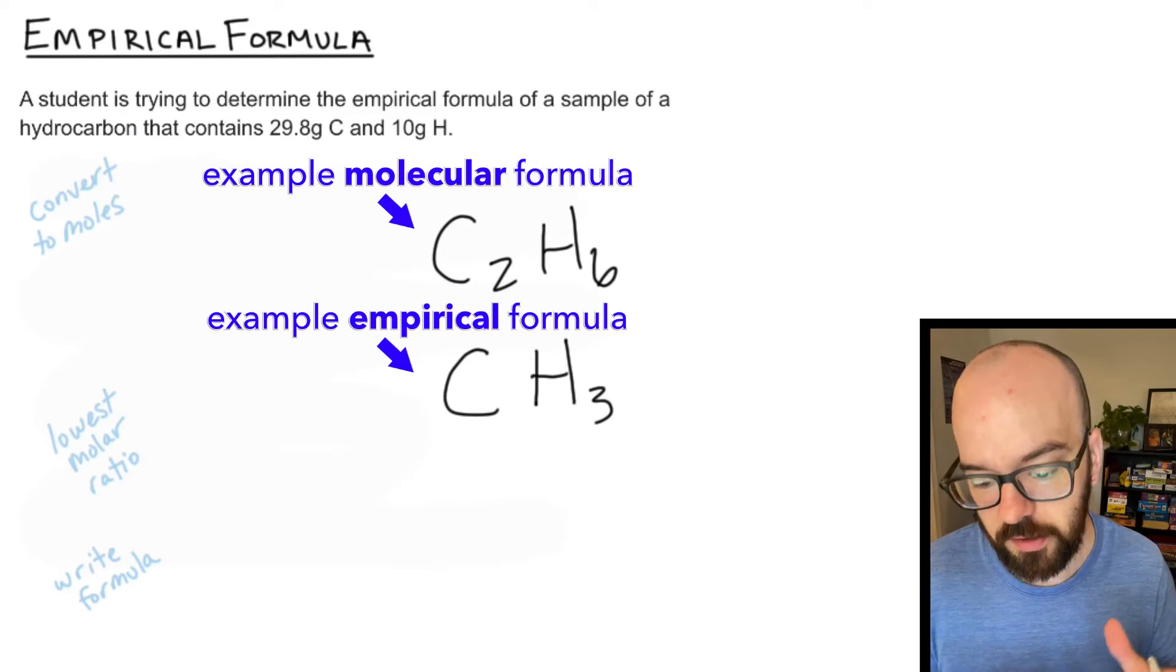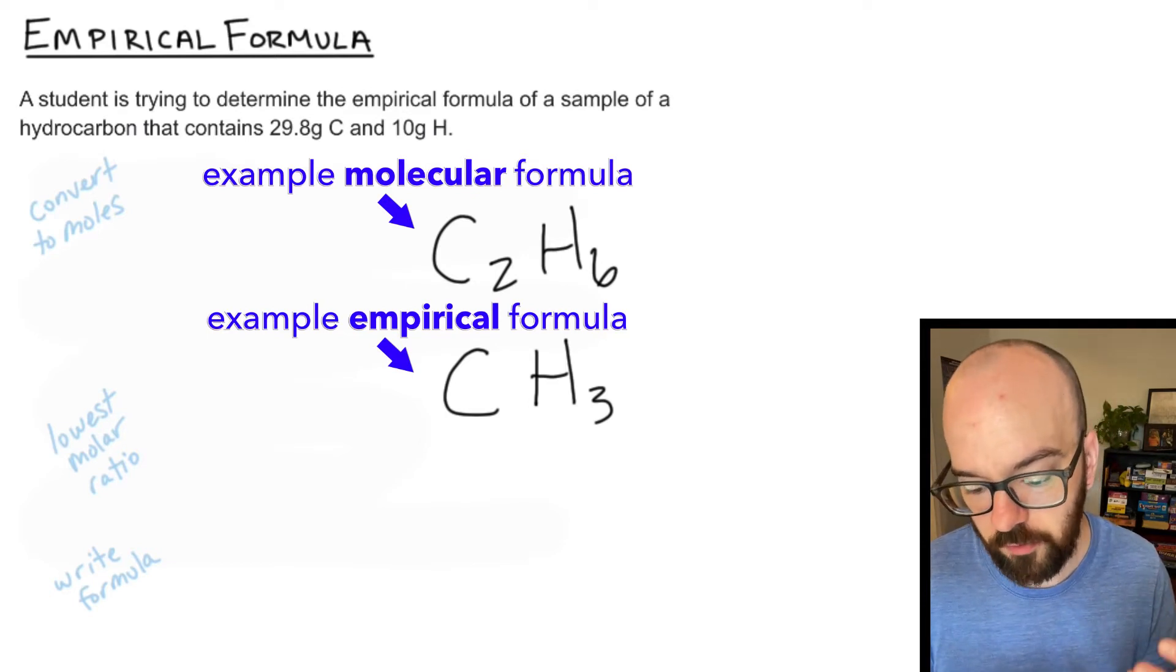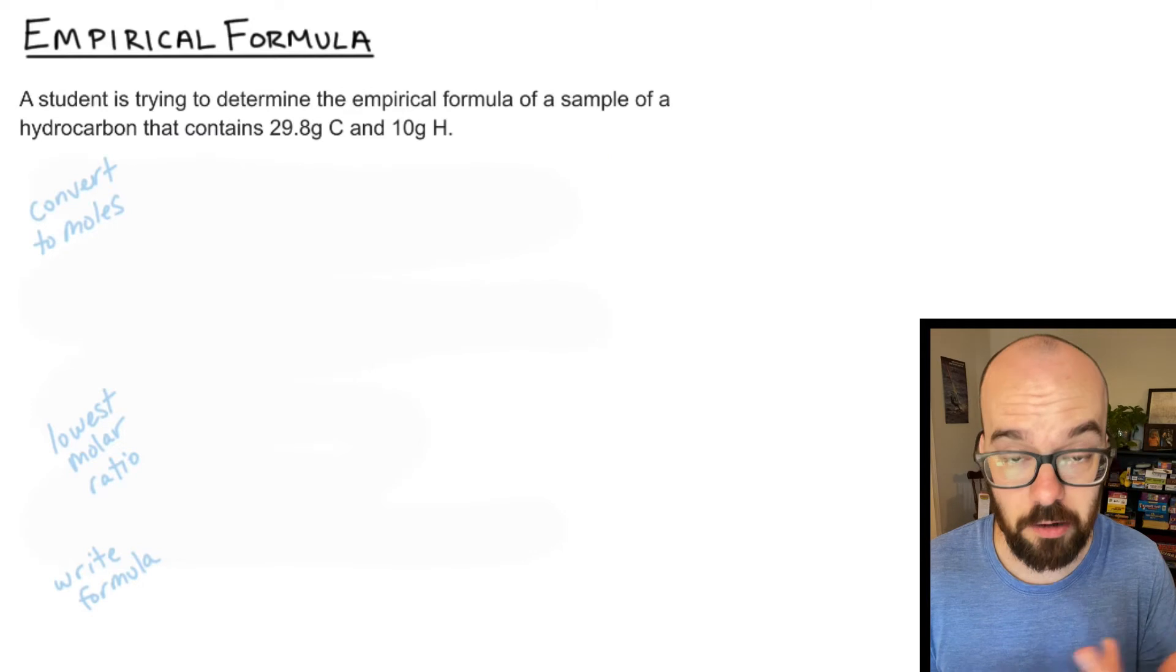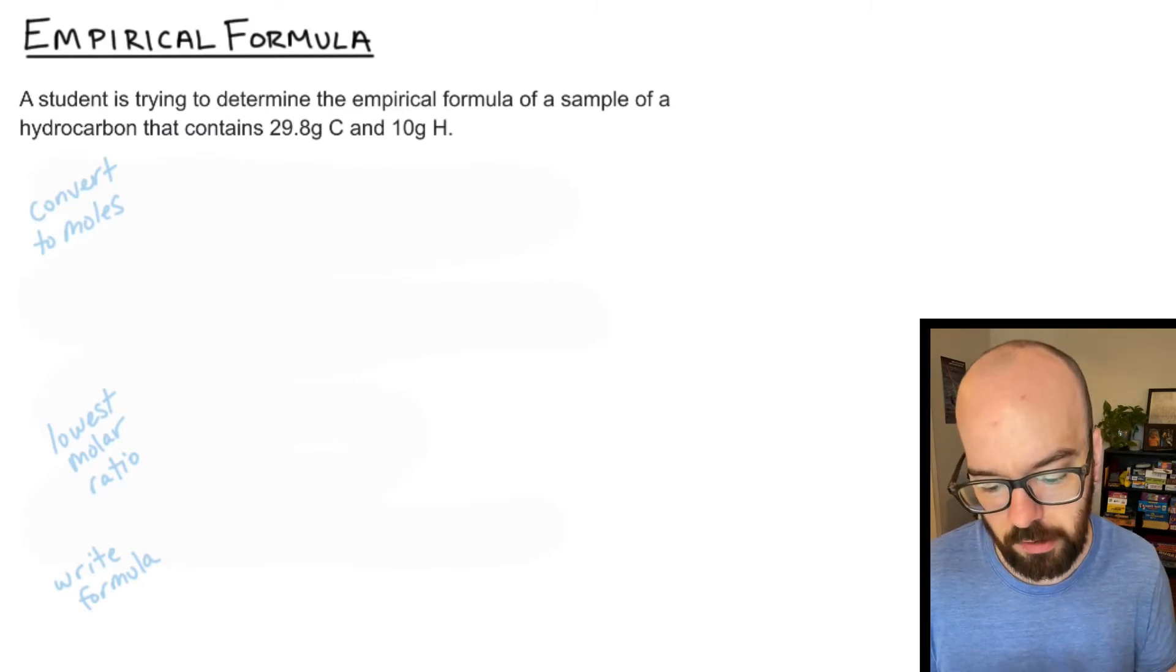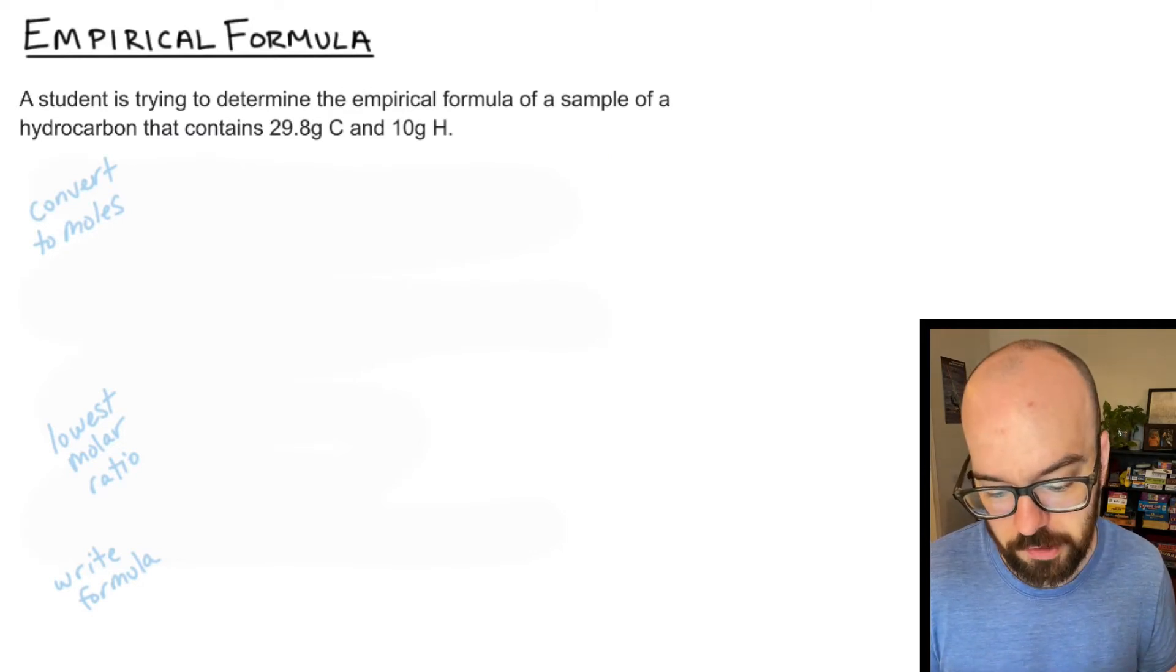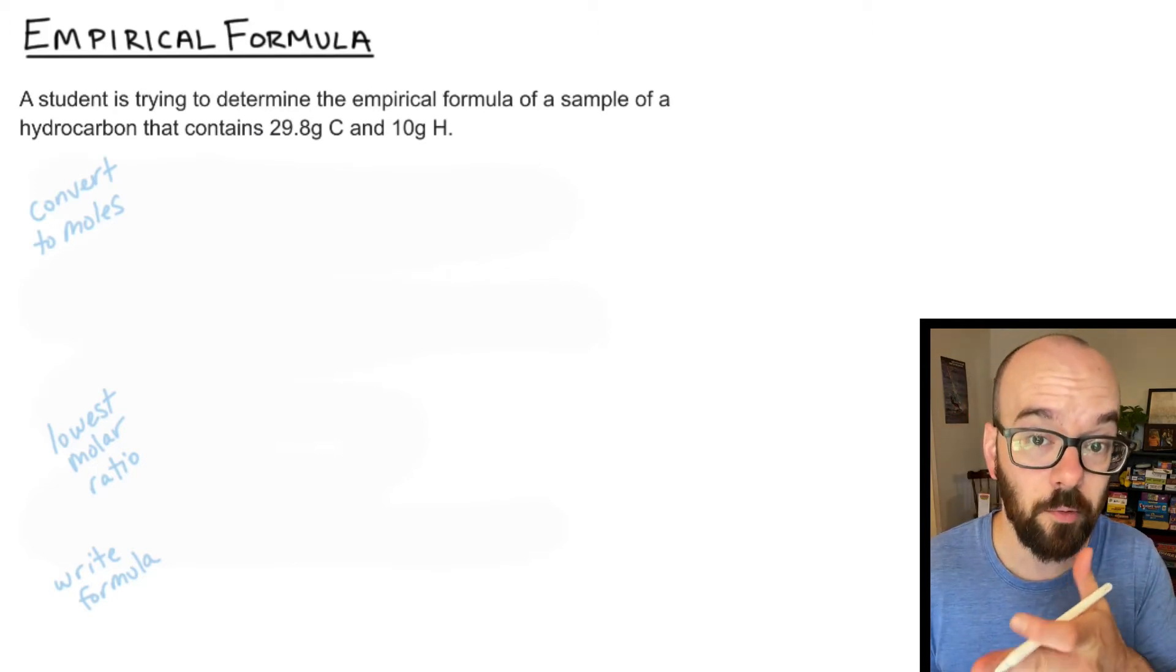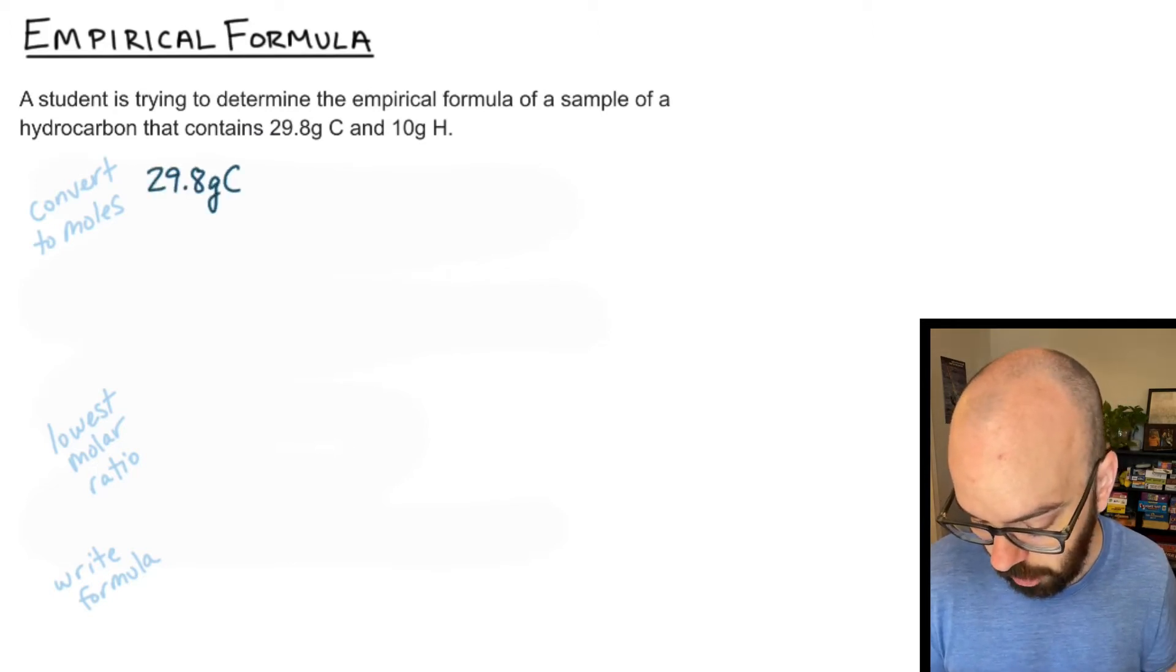The problem says a student is trying to determine the empirical formula of a sample of a hydrocarbon, meaning it just has hydrogen and carbon, that contains 29.8 grams of carbon and 10 grams of hydrogen. So we're going to do two separate calculations to convert from grams to moles. We'll start with carbon here.